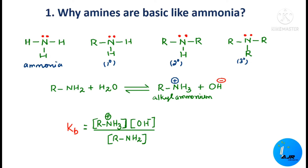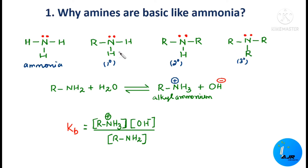In ammonia, we have 3 hydrogen atoms and a lone pair of electrons. In primary amine, one hydrogen atom is replaced by an alkyl group and we have a lone pair of electrons. In secondary amine, 2 hydrogen atoms are replaced by 2 alkyl groups. In tertiary amine, 3 alkyl groups are there along with a lone pair of electrons. The basic nature of ammonia as well as these amines is mainly due to the presence of the unshared pair of electrons.